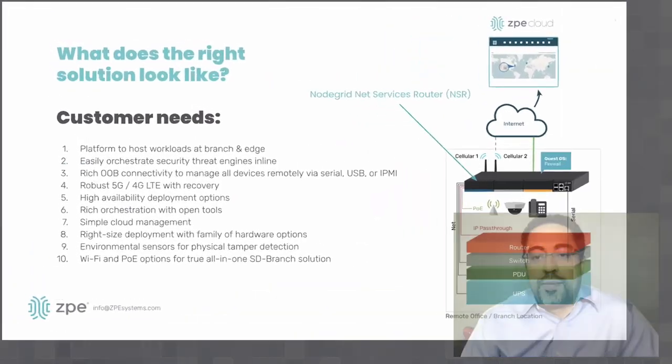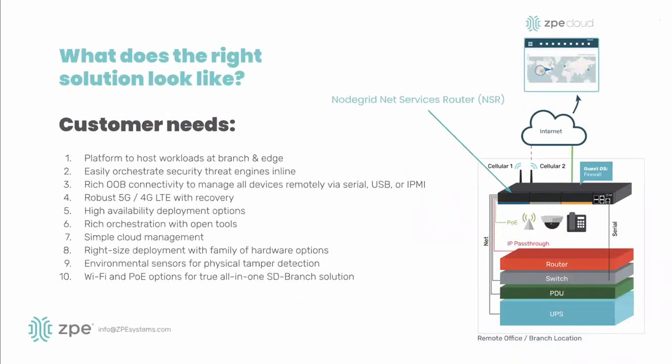This is how deployment looks in a branch location — a single device. It has all of the orchestration, can manage remote infrastructure, and can connect to other devices of ours to scale out. We built many different configurations because of different customer requests, such as PoE ports or modularity, and I'll give you a tour of those devices.